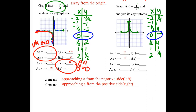Looking at the next graph, y equals one over x squared: as we approach zero from the left side, the graph goes up — toward positive infinity. As we approach from the right side, the graph goes up again — positive infinity in both cases. As we approach negative infinity for x, the y values level off at zero. The same happens on the right side — approaching zero. This confirms the horizontal asymptote at y equals zero.